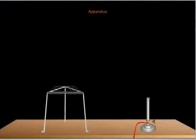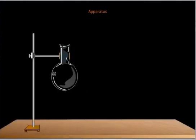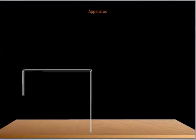Apparatus required: Tripod stand, burner, round-bottom flask fixed to a clamp, thistle funnel, delivery tubes and gas jar.